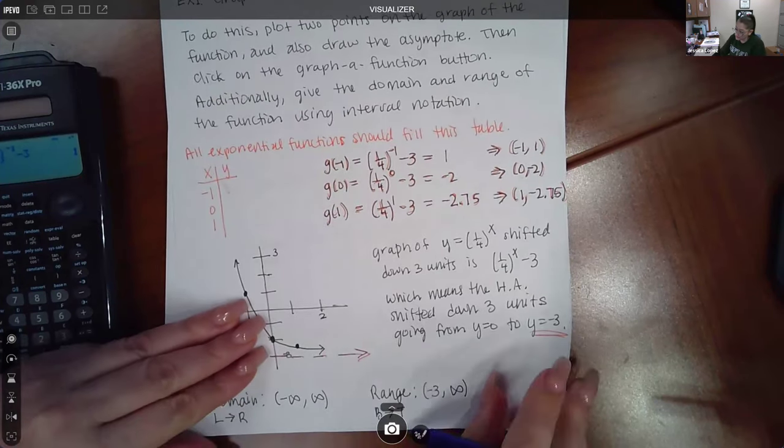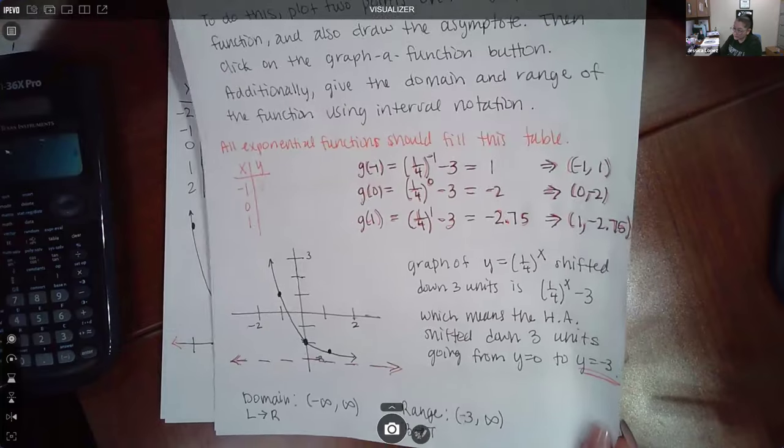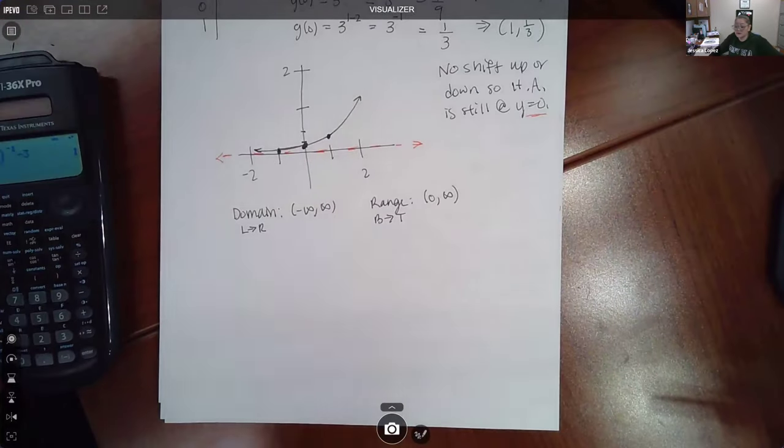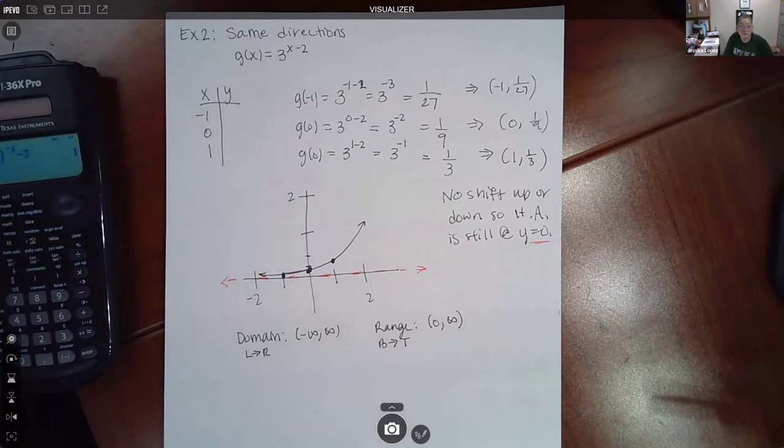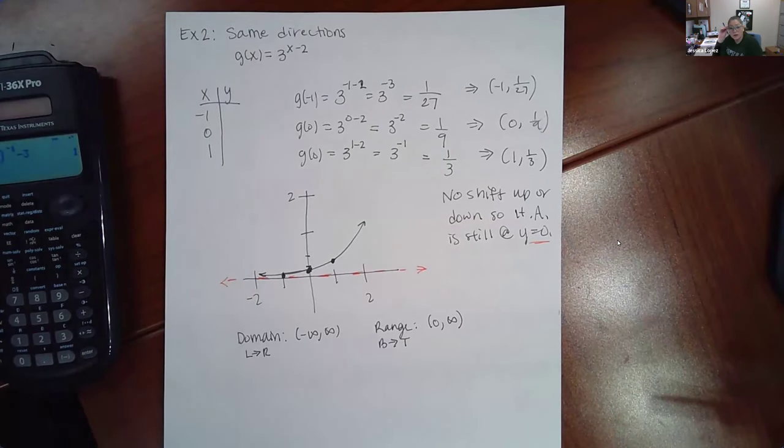I think we have another example of this same topic before we move on. Here it's the same directions as before: we need at least two points, then we need to draw the asymptote, then we need to hit the graph of function button, and then give the domain and the range.